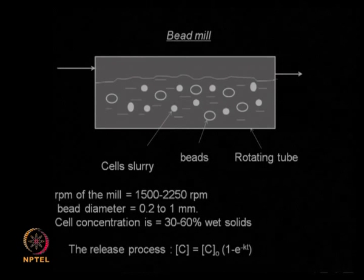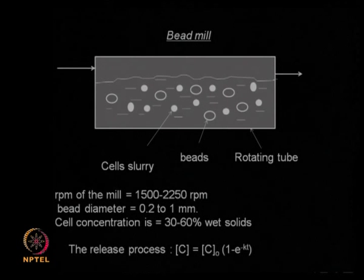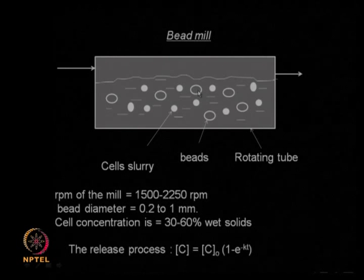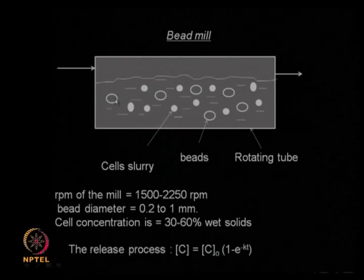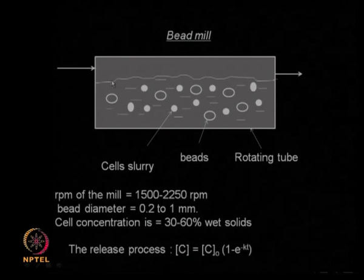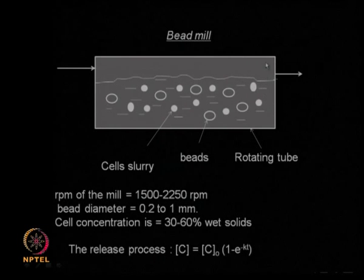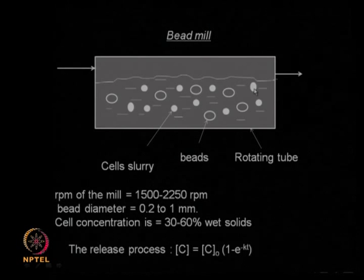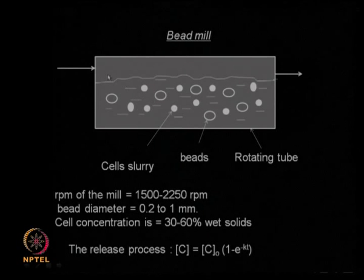This is called a bead mill. As the name implies, it has metal beads inside — ceramic, stainless steel, or iron beads. It is a cylindrical tubular equipment. The slurry containing your cells is taken inside, and as it rotates it tumbles — the metal beads hit the cells and because of mechanical attrition and force, the cells break. That is the principle of the bead mill.